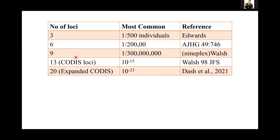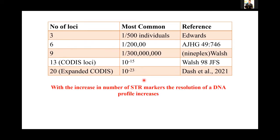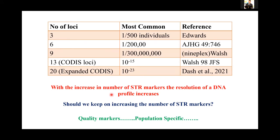If we analyze 3 loci, the discriminatory power may be 1 in 500 individuals. If we increase the number of loci to 6, it may give you a resolution of 1 in 200,000. As you keep increasing the number of loci, the discriminatory power increases — that is the basic rule. But should we keep increasing the number of STR markers? Definitely not. The criteria should be: we should search for quality STR markers that are population-specific in nature.